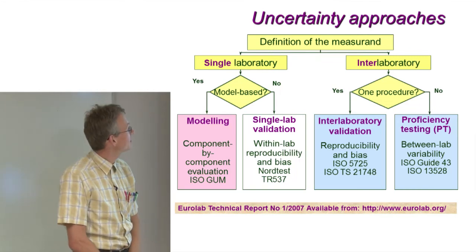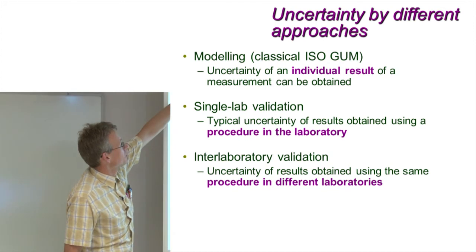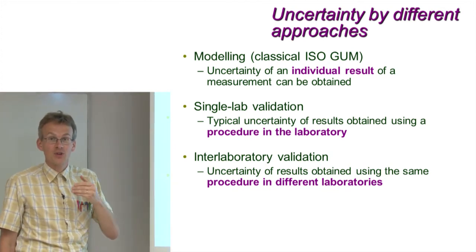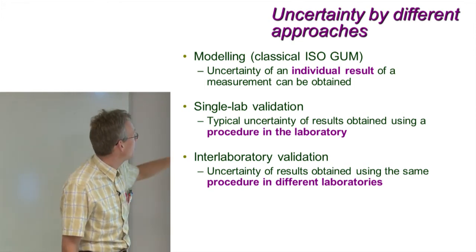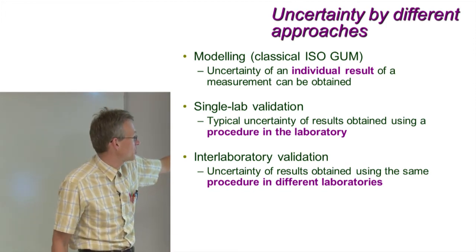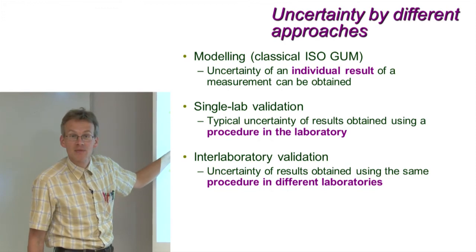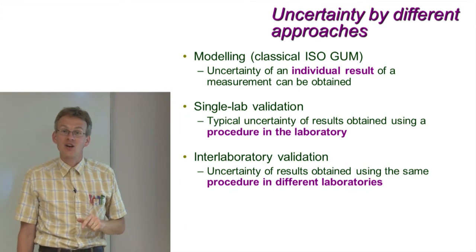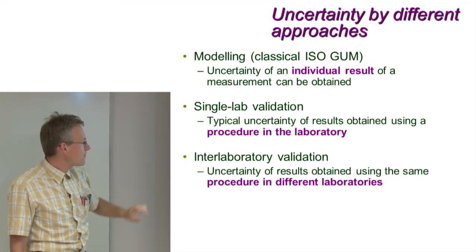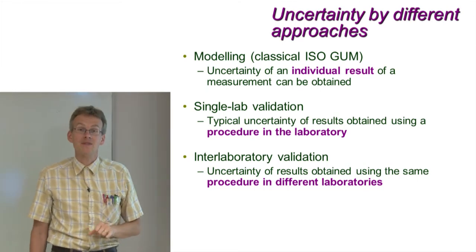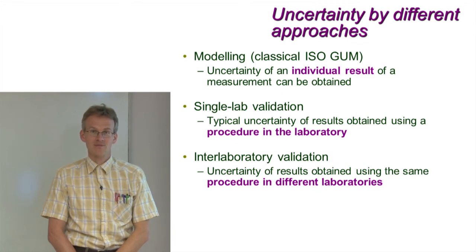The approaches give uncertainties that refer to different situations. The modeling approach calculates the uncertainty for an individual actual result obtained on one concrete day with one concrete sample. The single lab validation approach calculates a typical uncertainty of results obtainable with a particular procedure, so the uncertainty estimate is linked to the procedure rather than to any particular sample. The interlaboratory approaches give a general typical uncertainty that can be expected from the procedure when used across different laboratories.